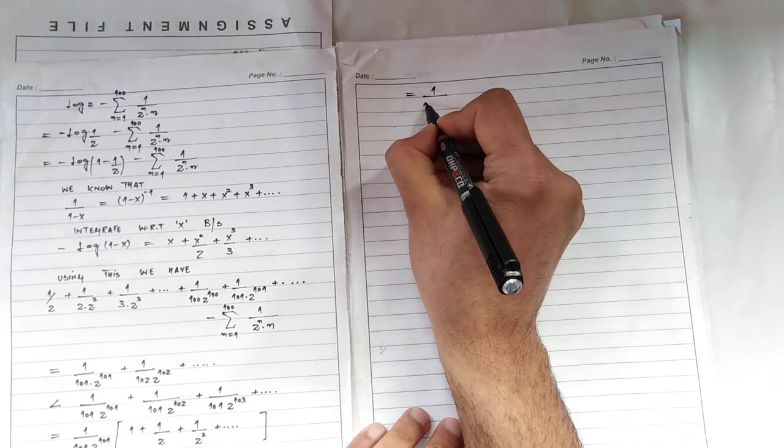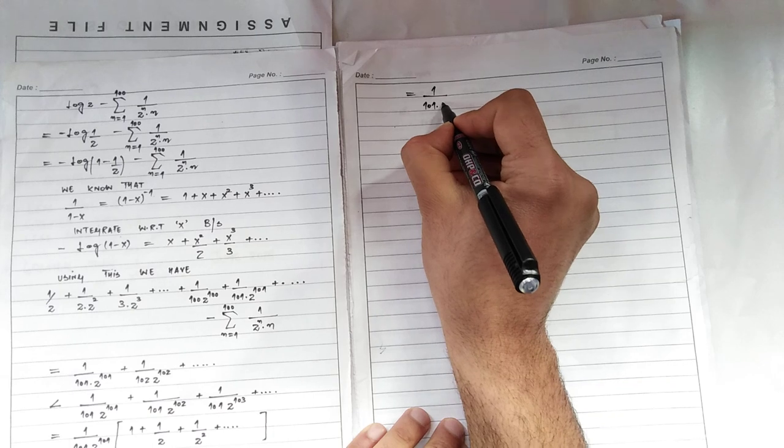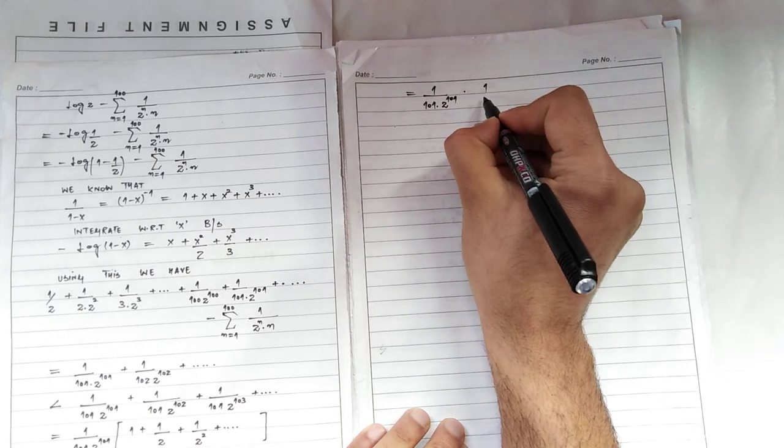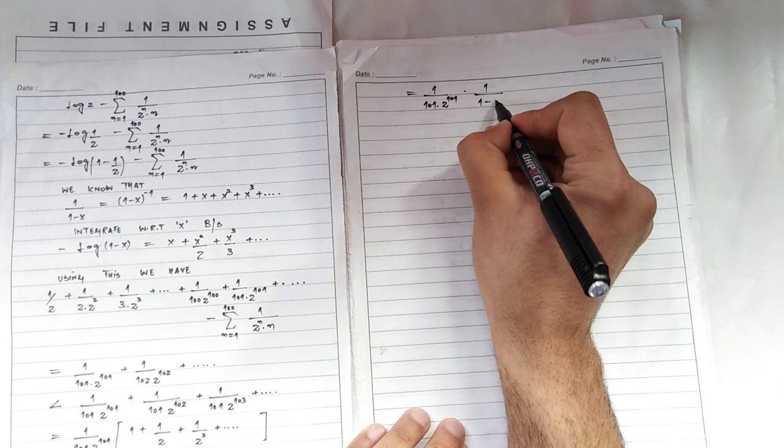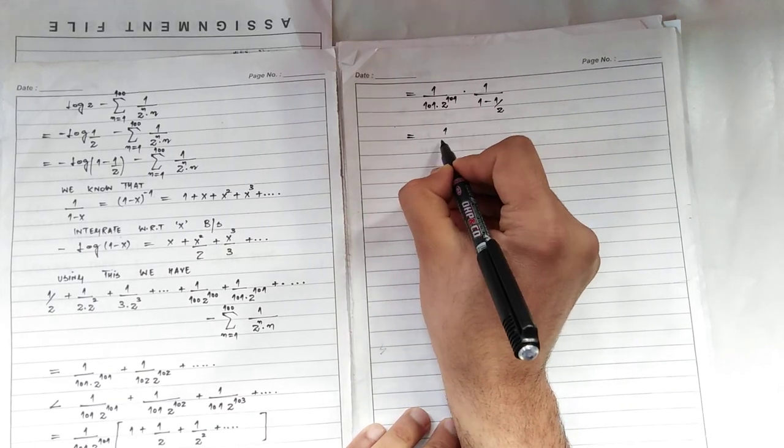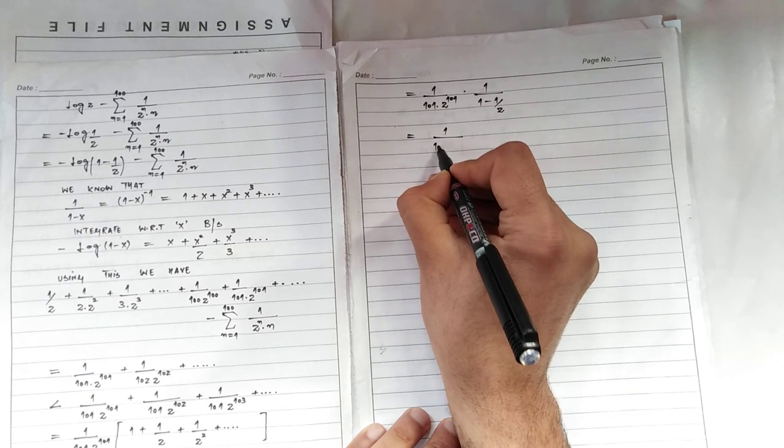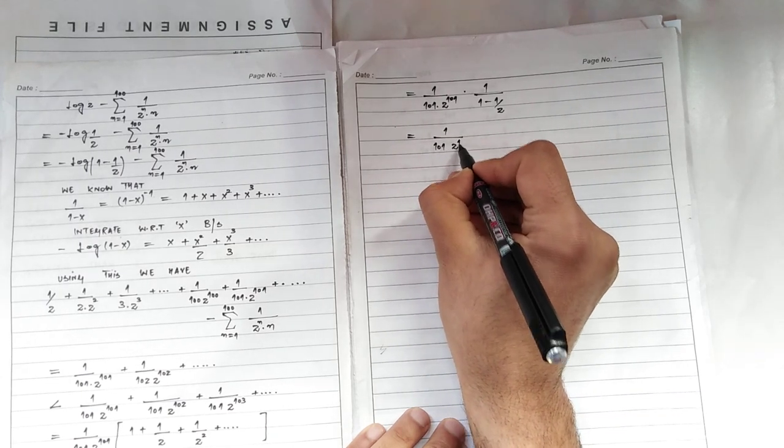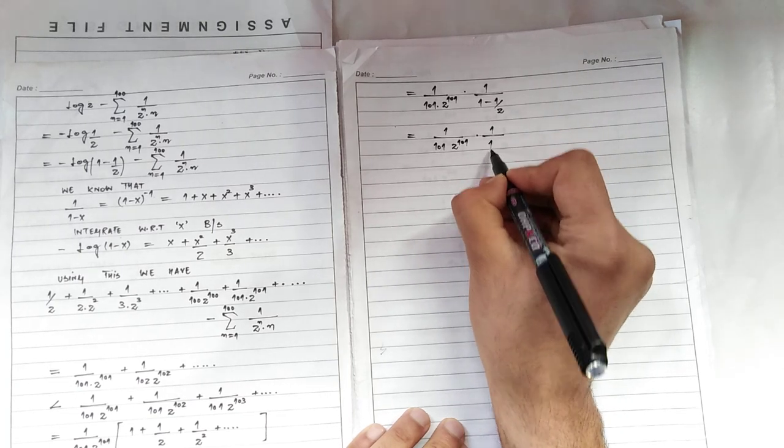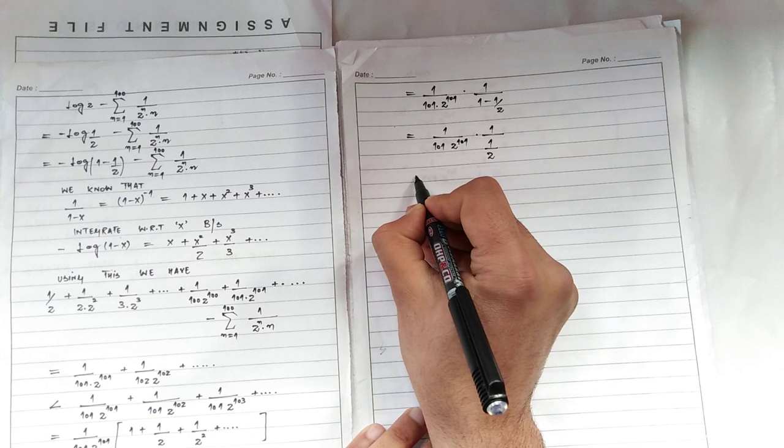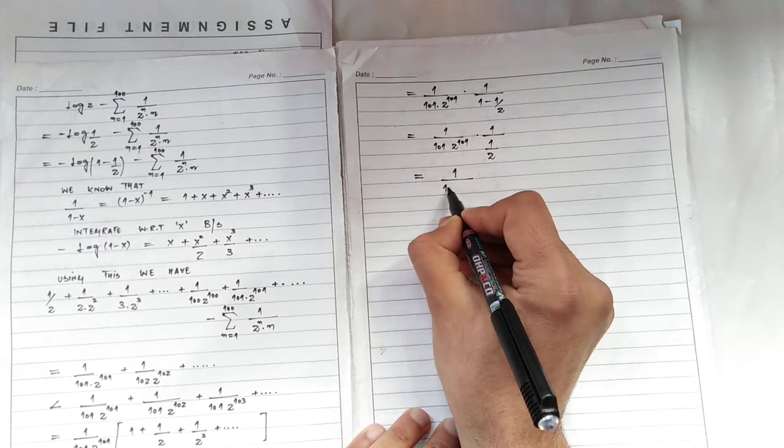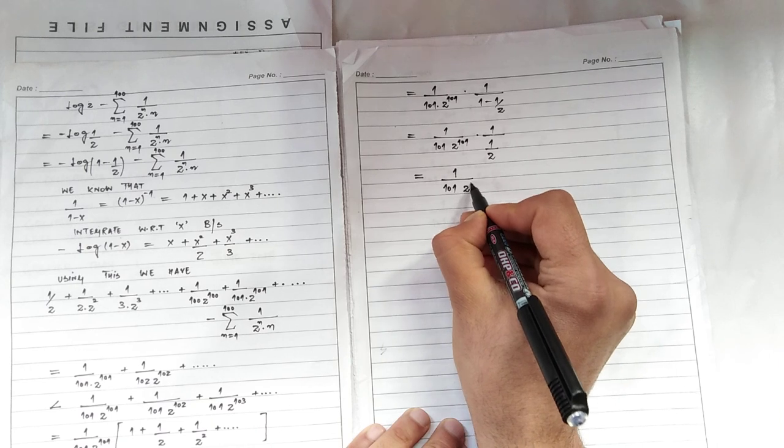We will be left with 1 upon 2 power 101 using that a upon 1 minus 1 by 2, which is nothing but 1 upon 2 power 101 multiplied by 1 upon 1 by 2. One of the twos will cancel out with this, so we are left with 1 upon 2 power 100 times 101.